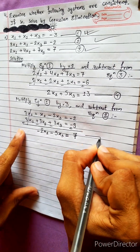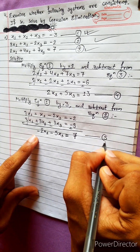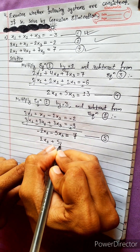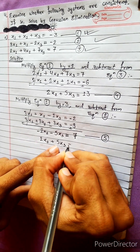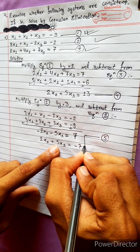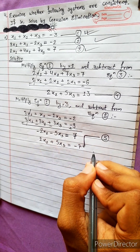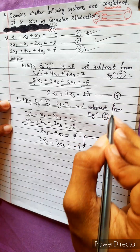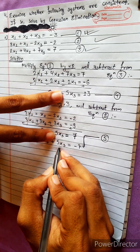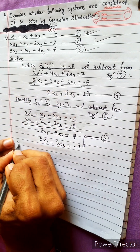This is our equation 5: 2x2 plus 5x3 equals minus 7. Now solving equations 4 and 5 by subtracting them from each other.